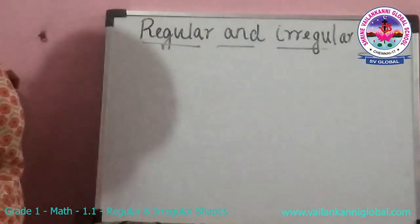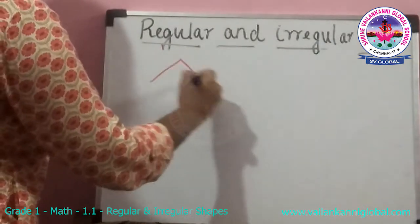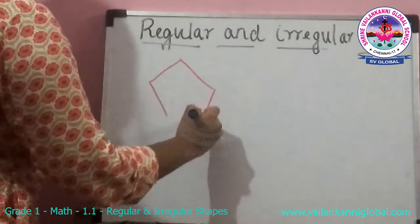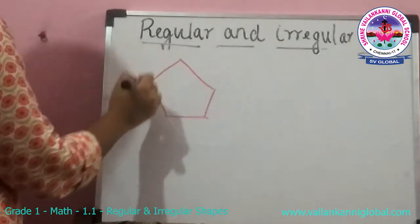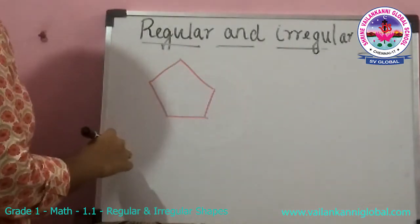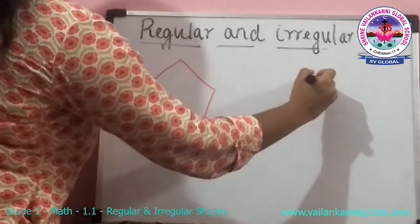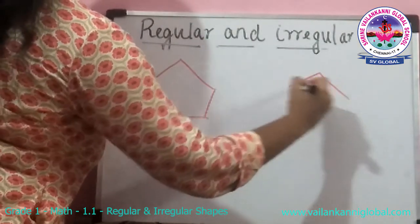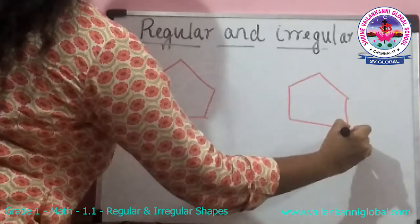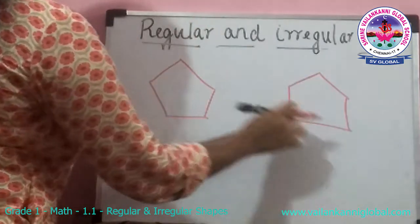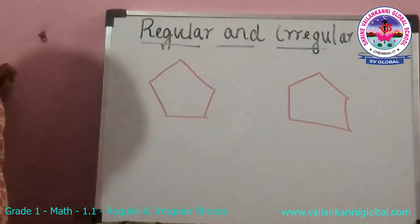Another one — this is your pentagon and it is a regular pentagon because all these five sides are equal. Whereas, in an irregular pentagon, all the sides will not be equal.